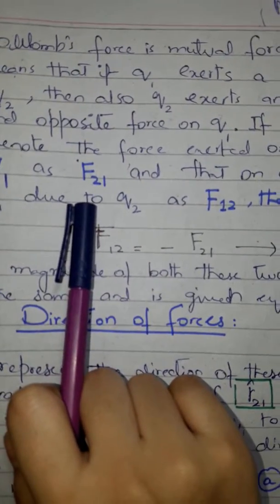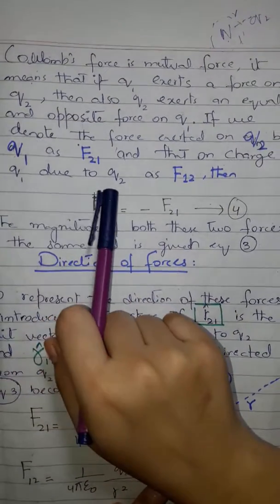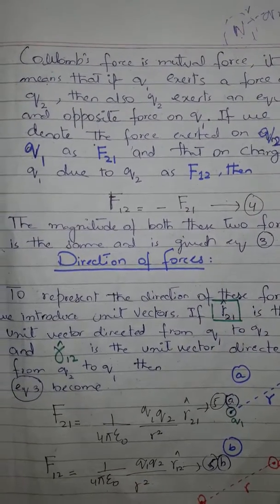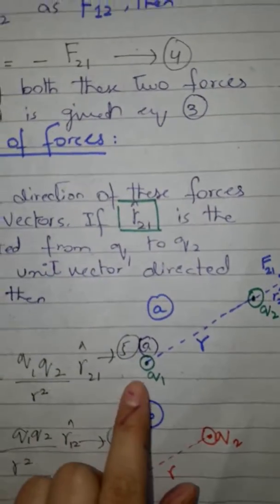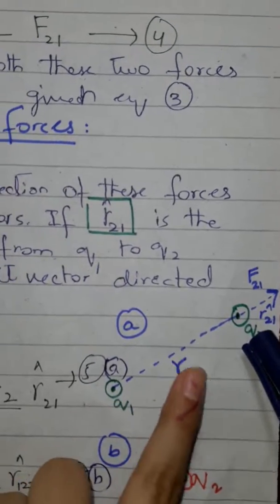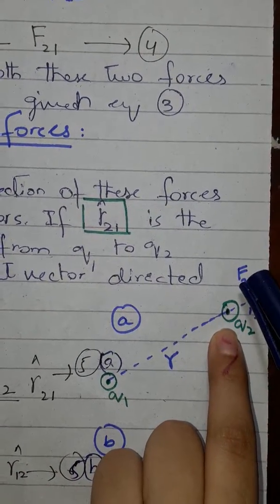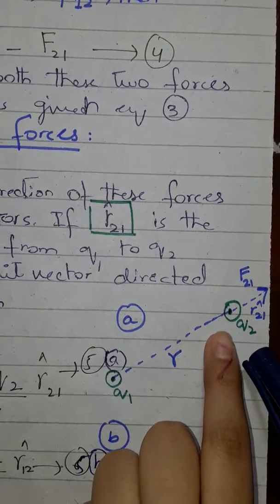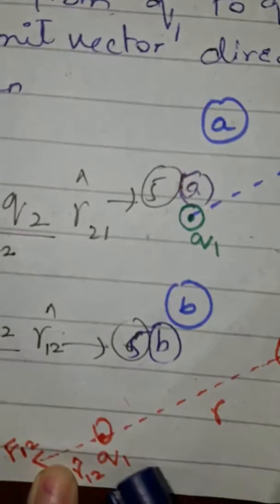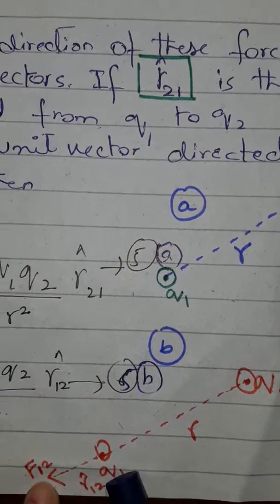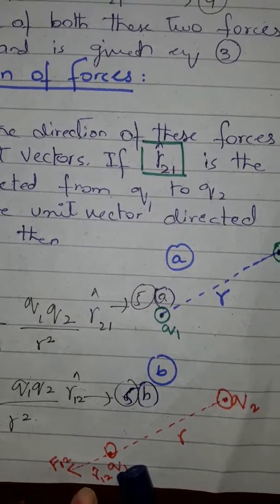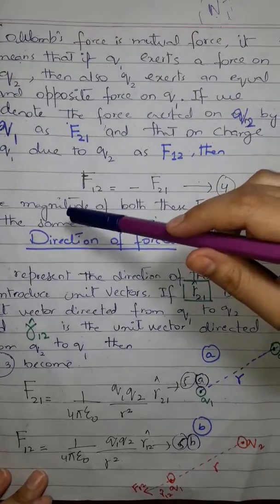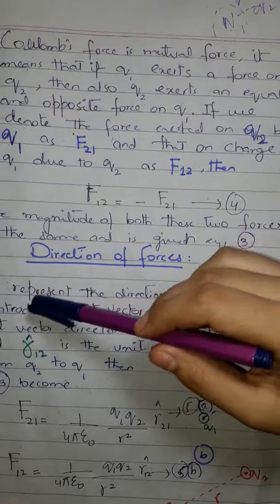Coulomb's force is a mutual force. q1 and q2 are joined by distance r, and the force is mutual — if q1 exerts a force on q2, then q2 also exerts a force on q1. These forces are equal and opposite. If q2 exerts force on q1 we denote it F₂₁, and if q1 exerts force on q2 we denote it F₁₂, so F₁₂ = −F₂₁.